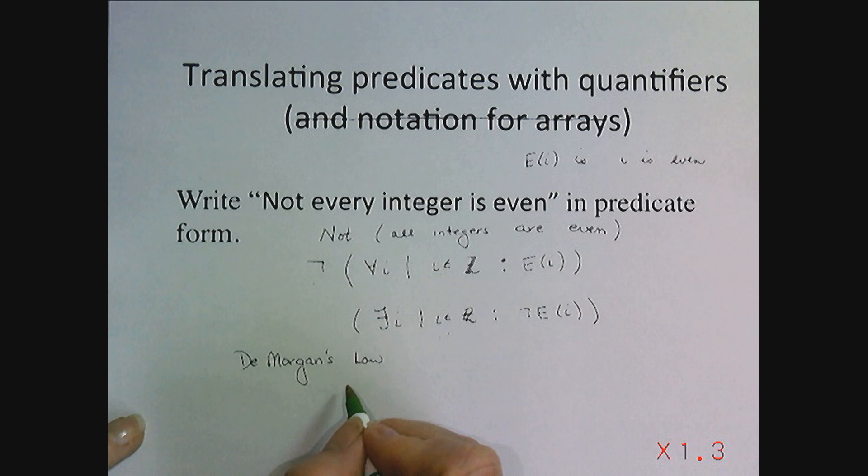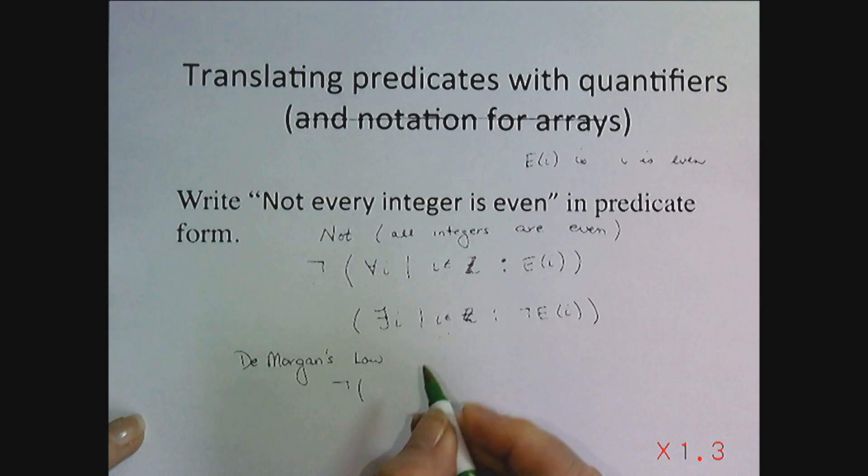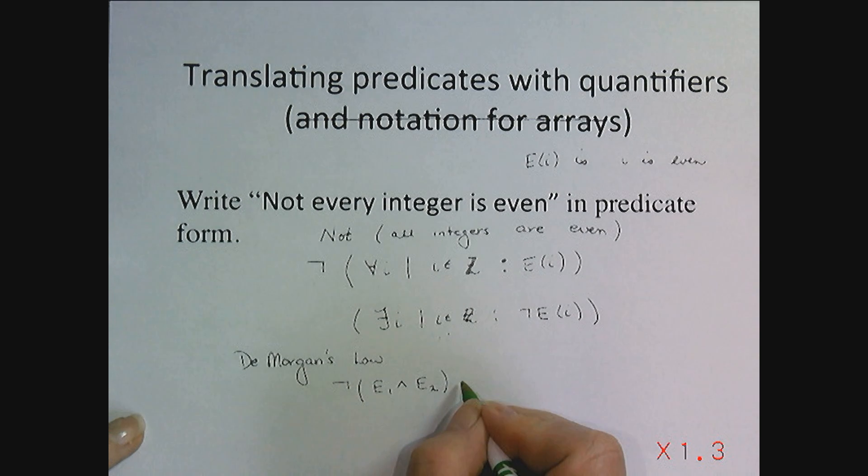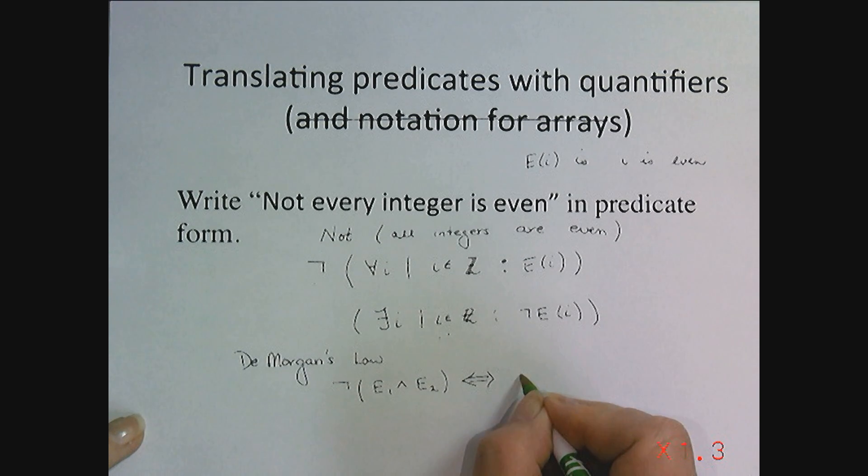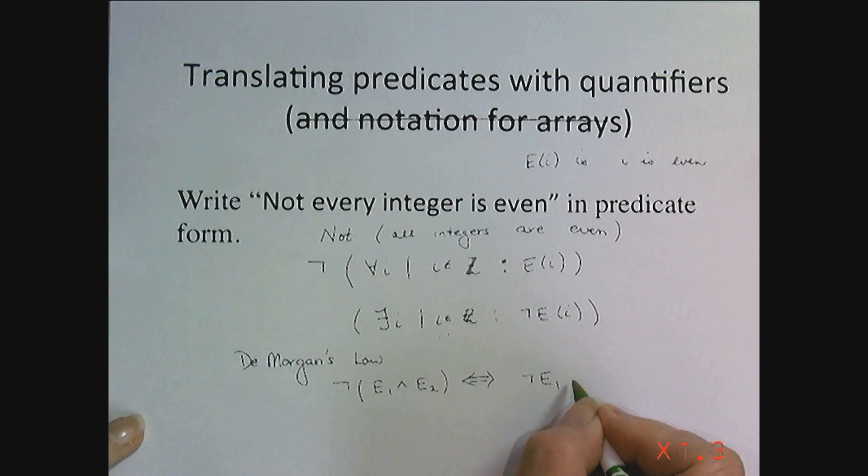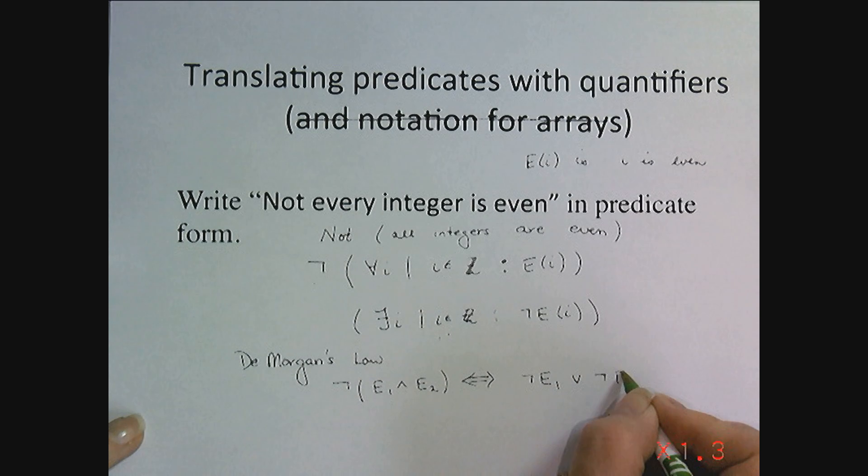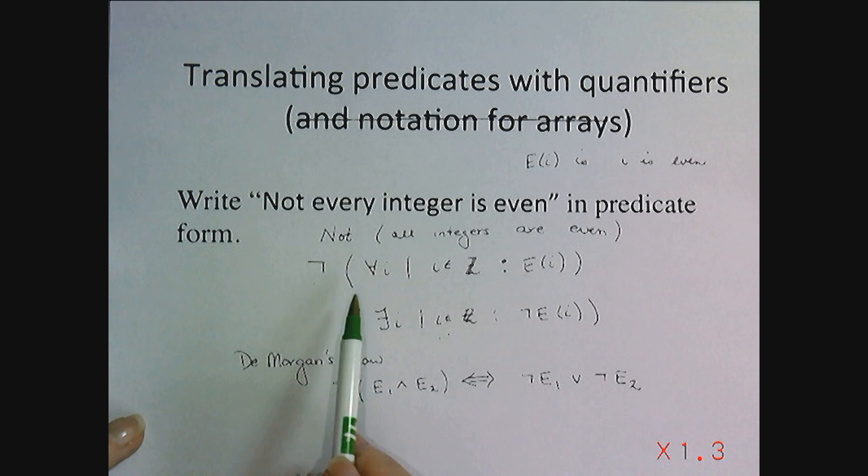It's suggested that if we had not expression one and expression two, that it was equivalent to not expression one or not expression two. So if you think about it, not for all,